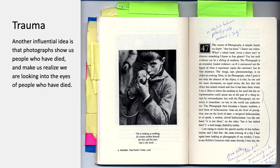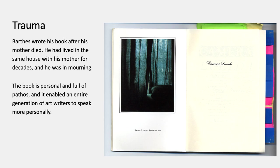Another influential idea is that photographs show us people who have died and make us realize that we're looking into the eyes of people who have died. Barthes is very fascinated by photographs of people, especially old photographs, because then the people will have died. His book is full of pathos and emotion because he wrote it in the year after his mother died — he had lived in the same house with his mother for decades and was deep in mourning.